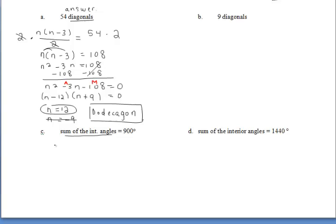For part c, we're given the sum of the interior angles equals 900. To find the sum of the interior angles, we do n minus 2 times 180 and we can set that equal to 900.